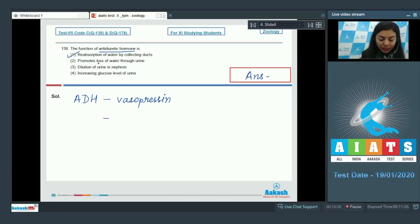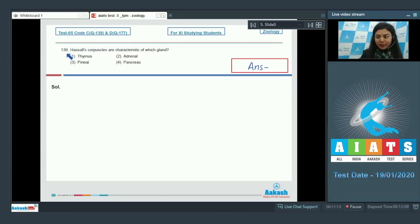So under its stimulation, our collecting ducts will reabsorb more water to save and conserve water. So this is the correct function of anti-diuretic hormone. The right answer here would be option number one. Question number 139: Hassall's corpuscles are characteristic of which gland - thymus, adrenal, pineal, pancreas.